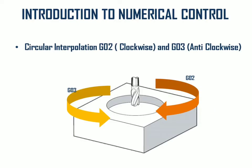G02 is circular interpolation clockwise and G03 is circular interpolation anticlockwise. When you want to prepare a circular slot or perform a circular machining operation, you need to move from one point to another point along a circular path. G02 is used for clockwise circular motion and G03 for anticlockwise direction.